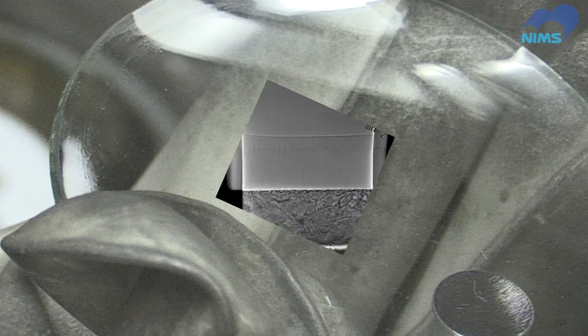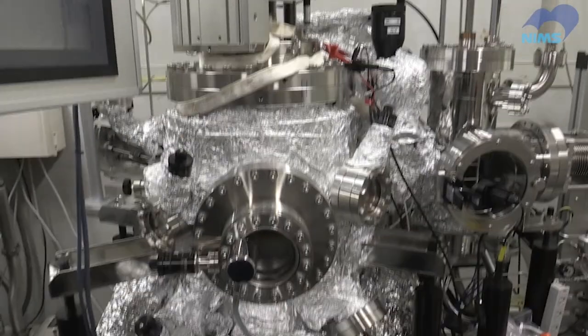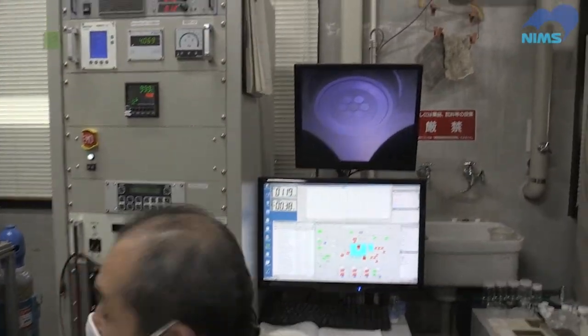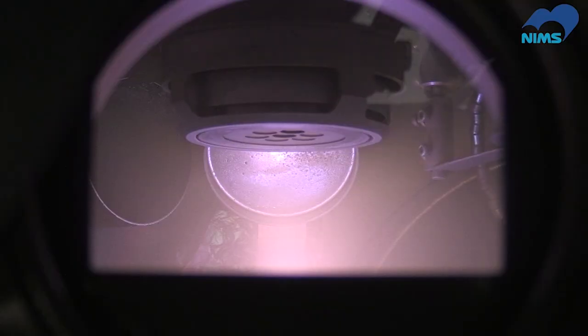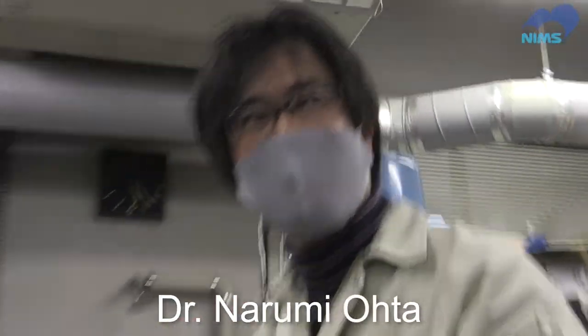We found that silicon films several micrometers in thickness perform extremely well as battery anodes. The films are deposited by sputtering in a high vacuum chamber for 30 hours. Unfortunately, this method is costly, time-consuming, and unsuitable for large-scale production. A novel approach by Dr. Narumi Ota can overcome these issues.